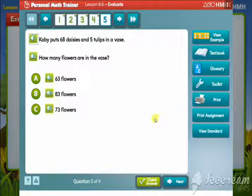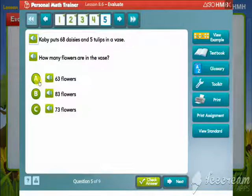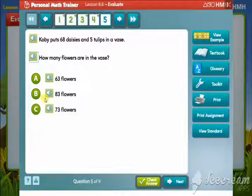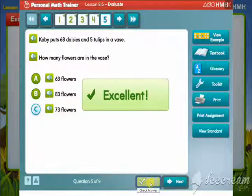Kobe put 68 daisies and 5 tulips in a vase. How many flowers are in the vase? Excellent!